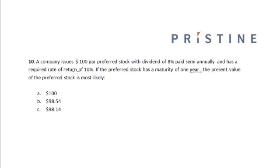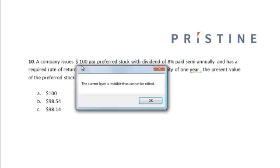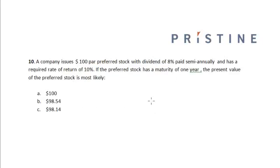A company issues $100 preferred stock with a dividend of 4% paid semi-annually and has a required rate of return of 10%. If the preferred stock has a maturity of 1 year, the present value of the preferred stock is most likely?